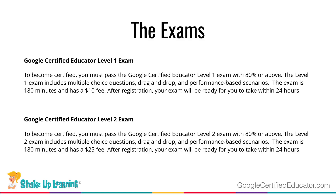To become a level one educator, you pass the level one exam with an 80% or above. To become level two, you pass the level two exam with an 80% or above. The level one exam includes multiple choice questions, drag and drop, and performance-based scenarios where you work inside a G Suite for Education domain with a special account. It is a hands-on test — you have to do things, create things, share things. The exam is timed at 180 minutes and has a $10 fee.